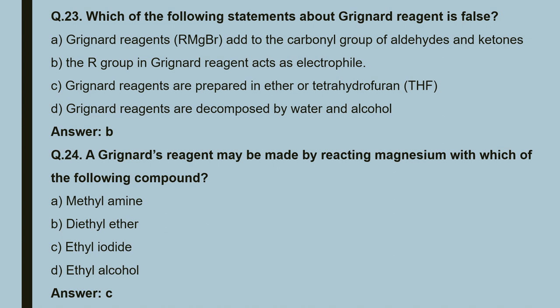Question 23: which statement about Grignard reagent is false? First, Grignard reagent adds to carbonyl groups of aldehydes and ketones — correct. Second, the R group in Grignard reagent acts as electrophile — this is false, because the R group acts as a nucleophile, not an electrophile. Third, Grignard reagents are prepared in ether or THF — correct. Fourth, Grignard reagents are decomposed by water and alcohol — correct. So the false statement is B.